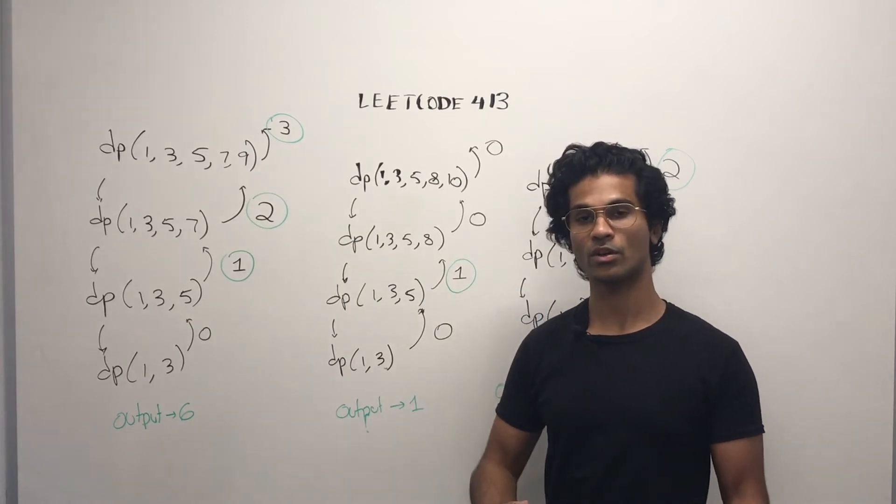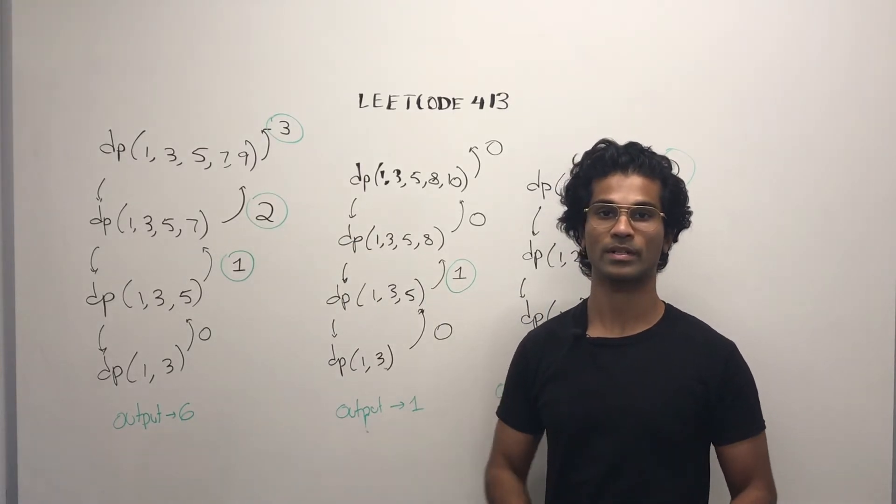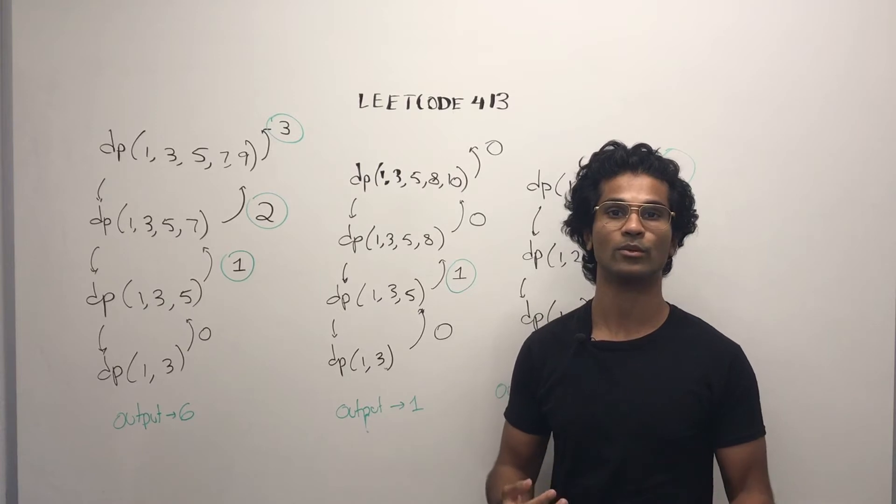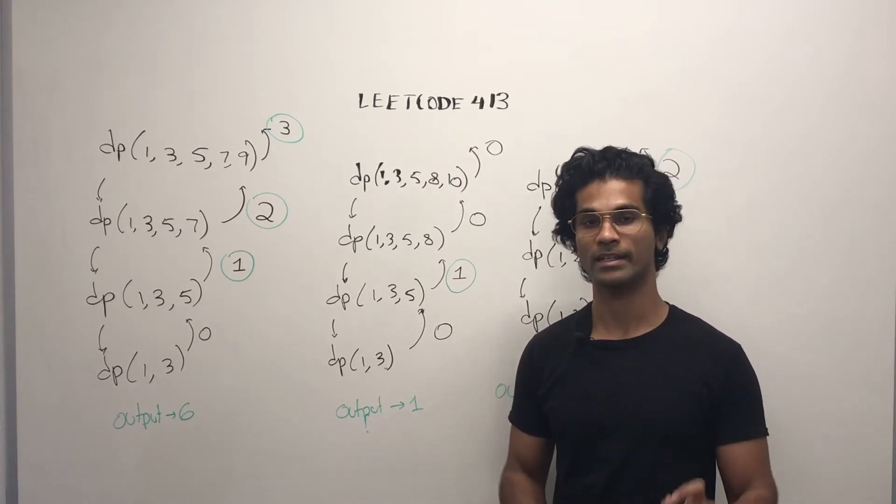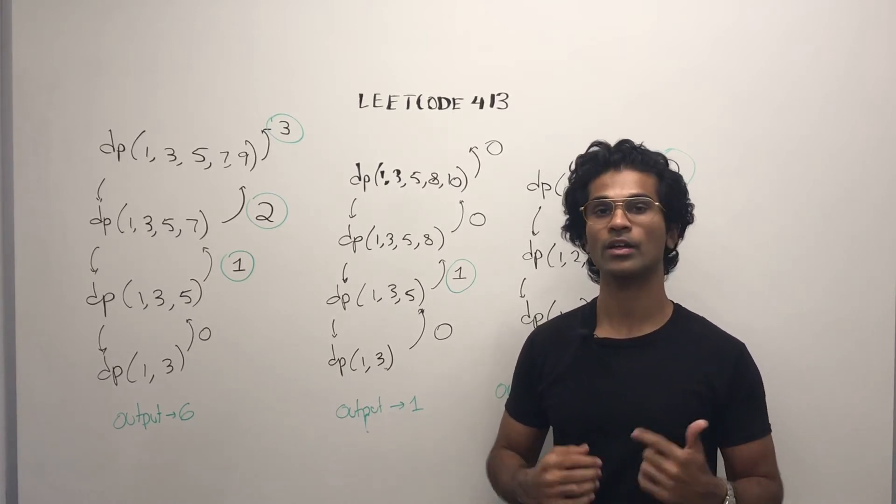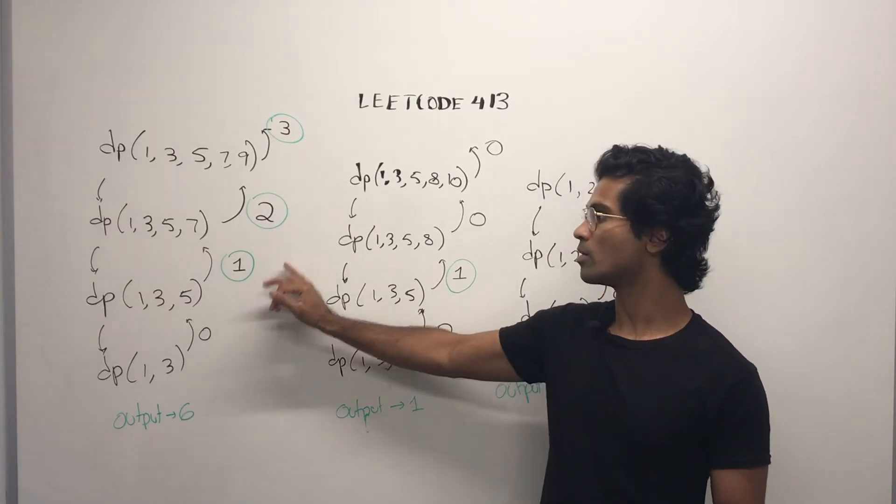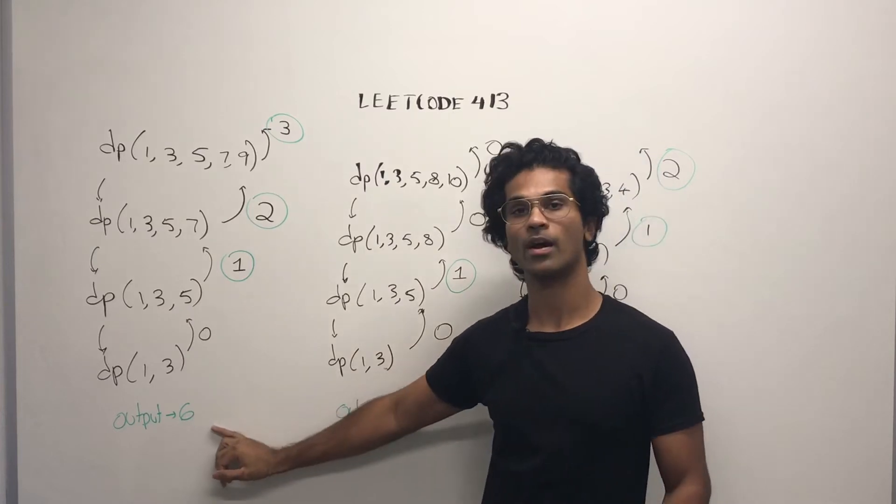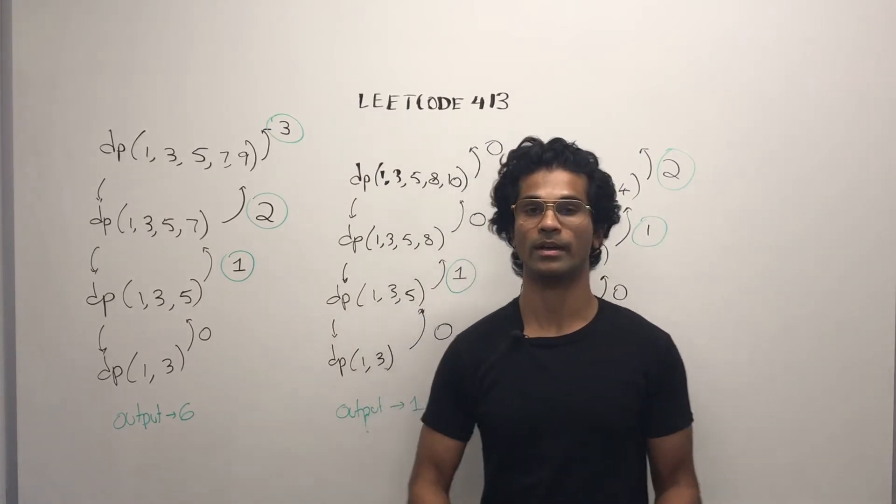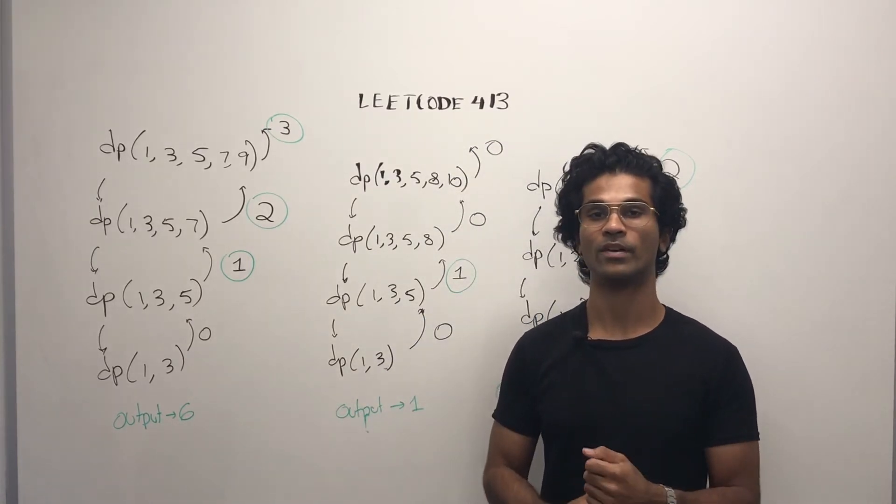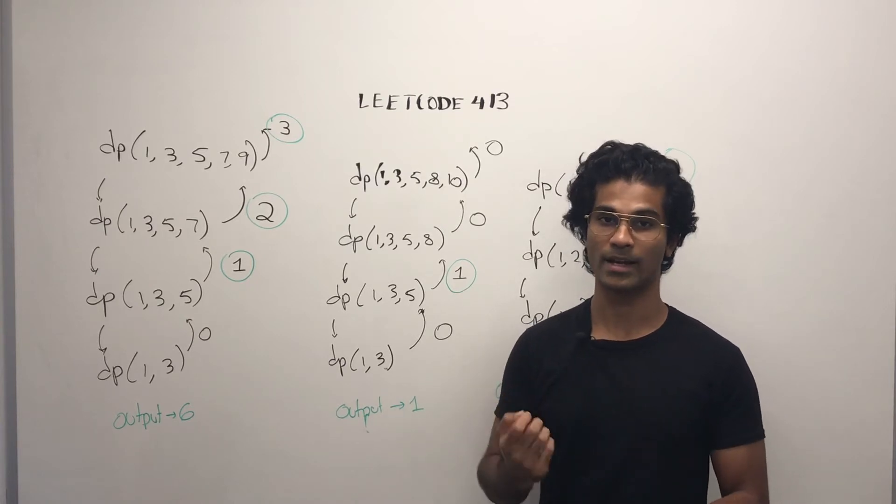Now, the original array, 1, 3, 5, 7, 9, is going to see if 9 minus 7 is equal to 7 minus 5. And it is, so it's going to add 1 to the 2 and return the 3. In total, we have 6, 1 plus 2 plus 3 for output of 6. So why do we do it like that? That's because we have a cumulative number that's adding up.